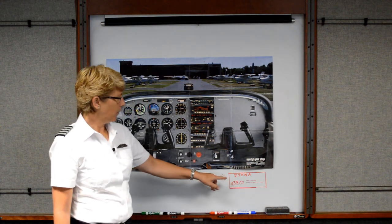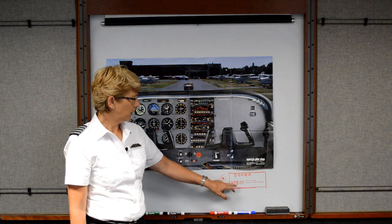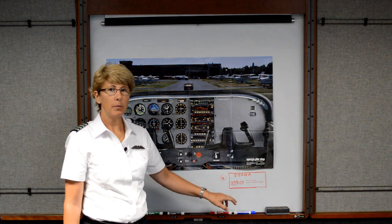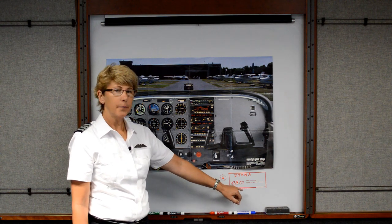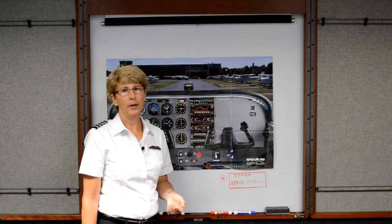So in our example we have Diana, and the frequency is 338, and then the identifier, if I were to put it in a GPS, could be GY, and it has the Morse code, which is similar to how we were identifying the VORs.